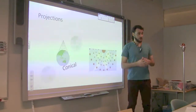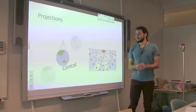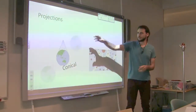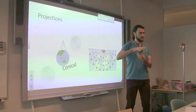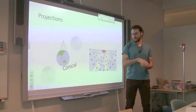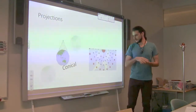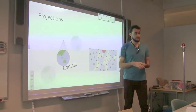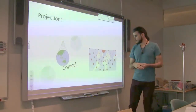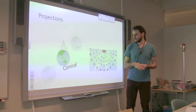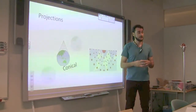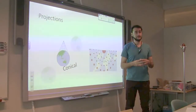There are also some conic projections. Instead of using this type of disc on top when you do the projection, you use a cone. This gives another type of map representation, and it's useful for some purposes — for example, for flight navigation.